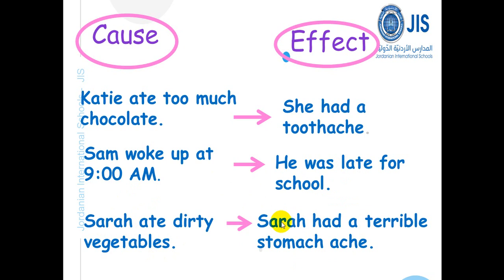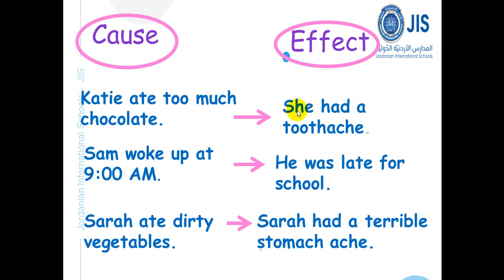So let's see here. Katie ate too much chocolate — the cause, the reason, is that Katie ate too much chocolate. We call this sentence a cause. So it led into the effect, the result, that she had a toothache.